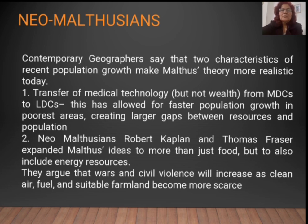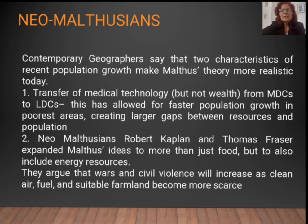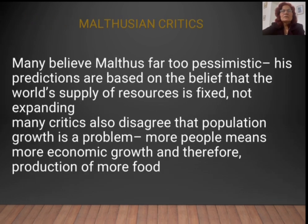The second characteristic: neo-Malthusians Robert Kaplan and Thomas Fraser expanded Malthus's ideas beyond just food to include energy resources. They argue that war and civil violence will increase as clean air, fuel, and suitable farmland become more scarce. These geographers thus see Malthus's theory as relevant to broader resource conflicts.